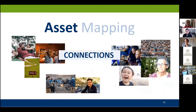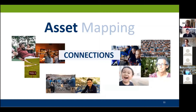The most important asset is the connections, the exchange that happens between these other assets. In the words of asset-based community development, this is considered an expression of social capital — the trust and cohesion that comes when individuals in a society are exchanging goods with each other and really building the community together. Those are the assets we're talking about when we talk about asset mapping.